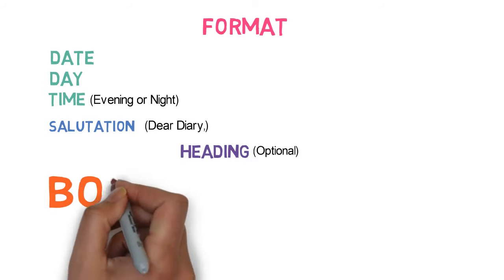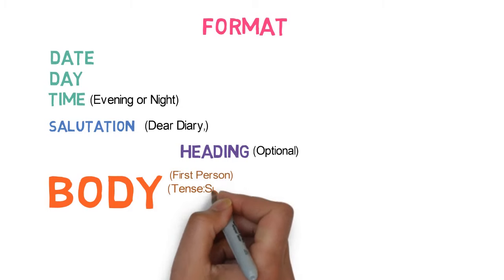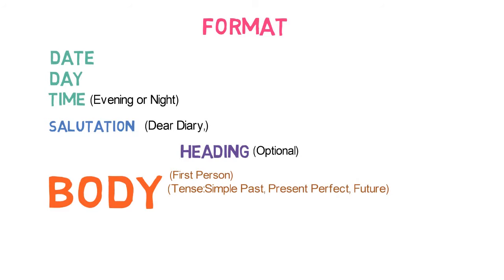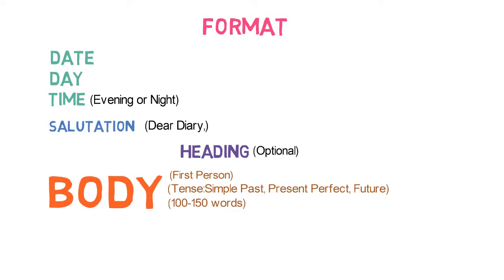Now comes the body of your diary — the actual content that needs to be written. It must be: first, in first person; second, the tense could be simple past, present perfect, or future tense; third, the word limit is 100 to 150 words. Please take advice from your teacher and stick to the word limit as per their guidance. Try to be more creative and thoughtful while writing the body.